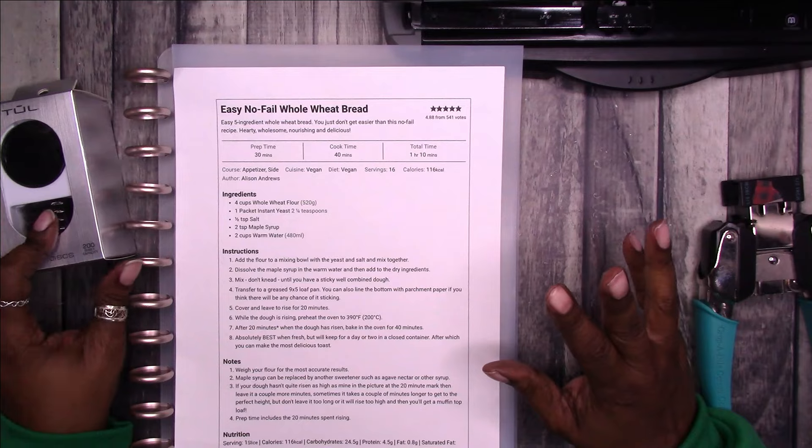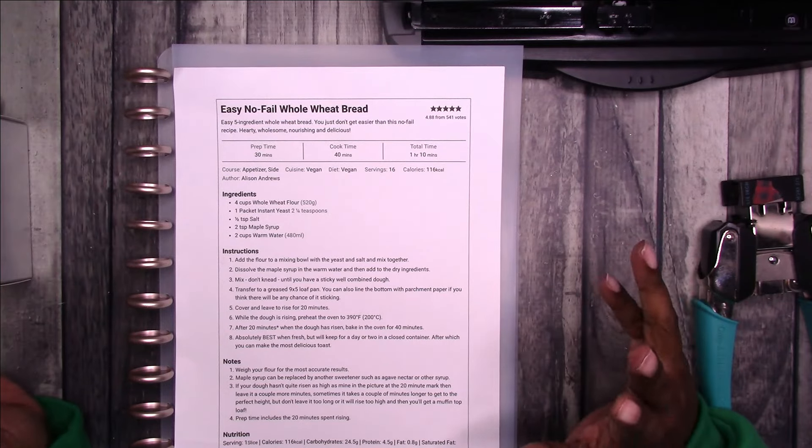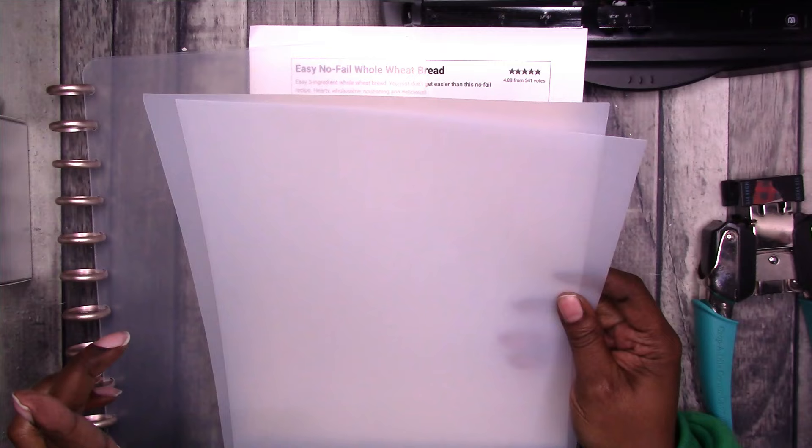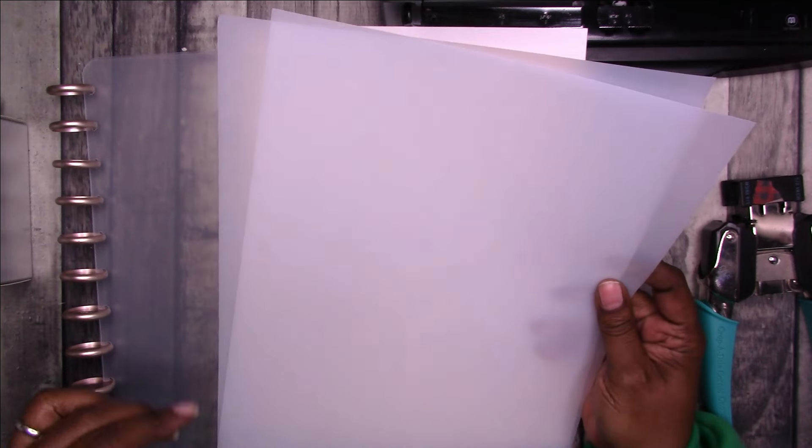I am making my own disc bound notebooks that are letter size. I am using the Dollar Tree chopping mat, so I've already cut this one down. I cut it to nine by eleven and a half so that it can hold letter size paper.